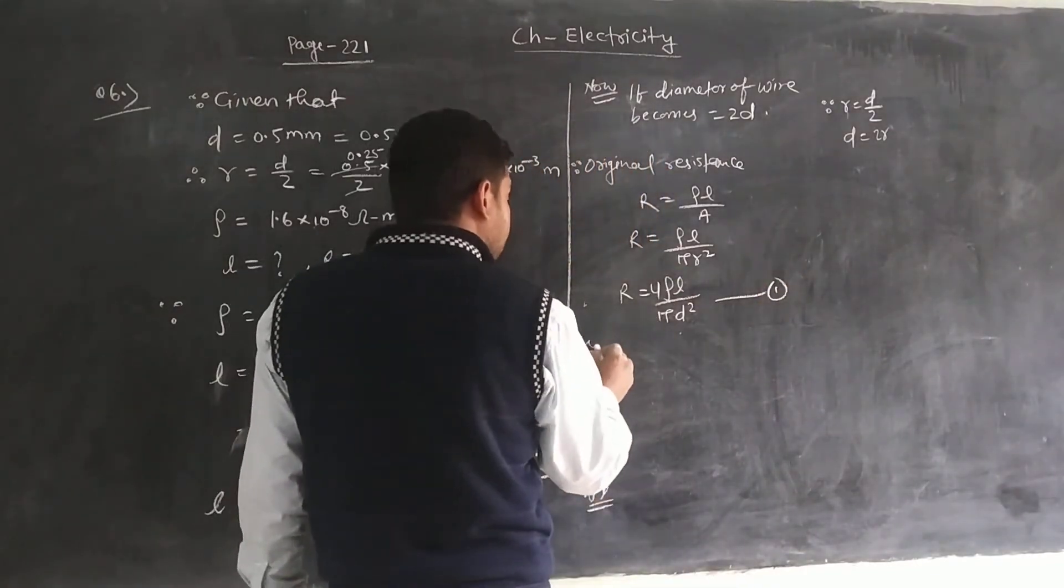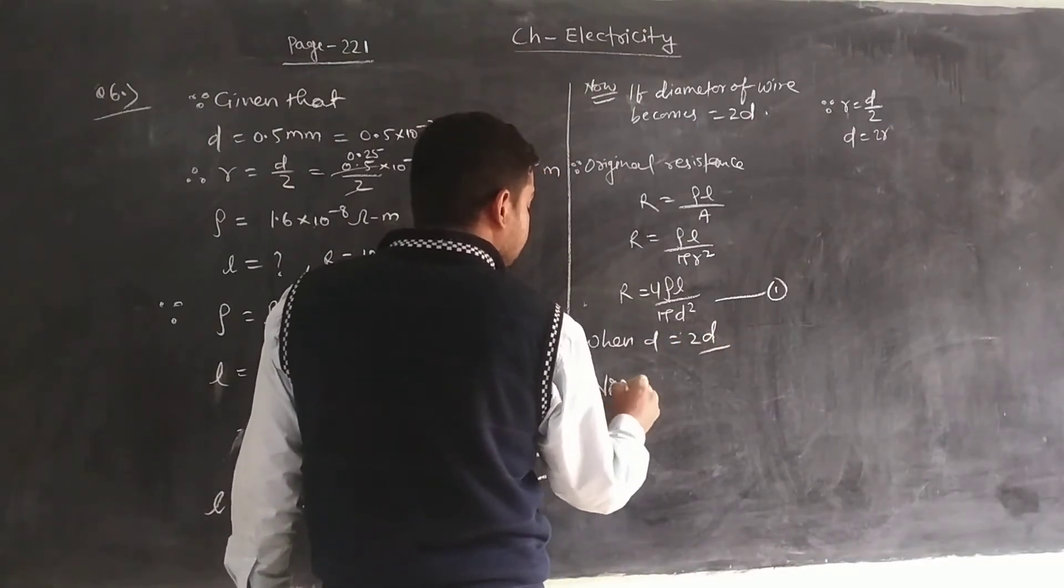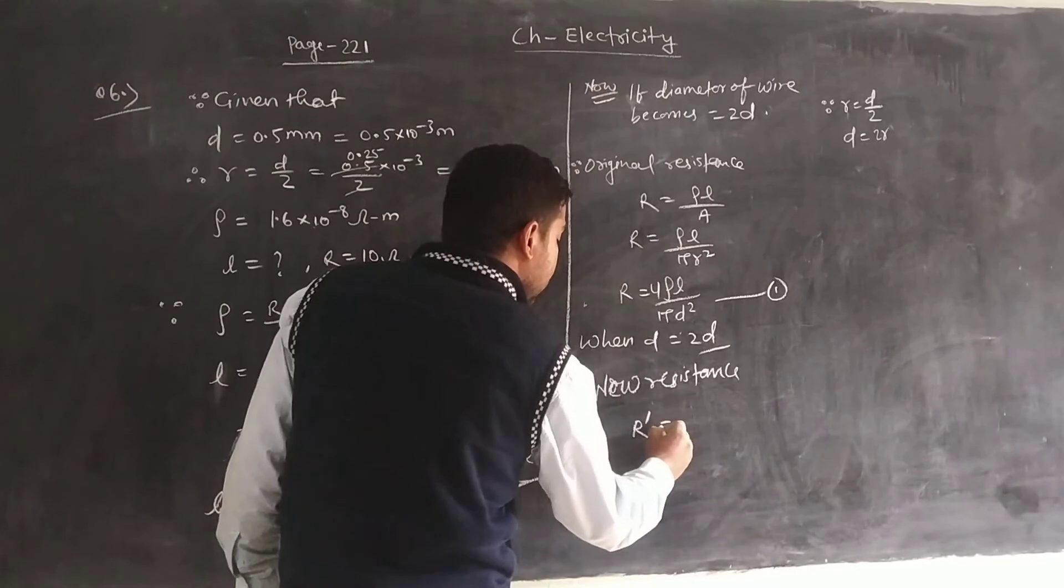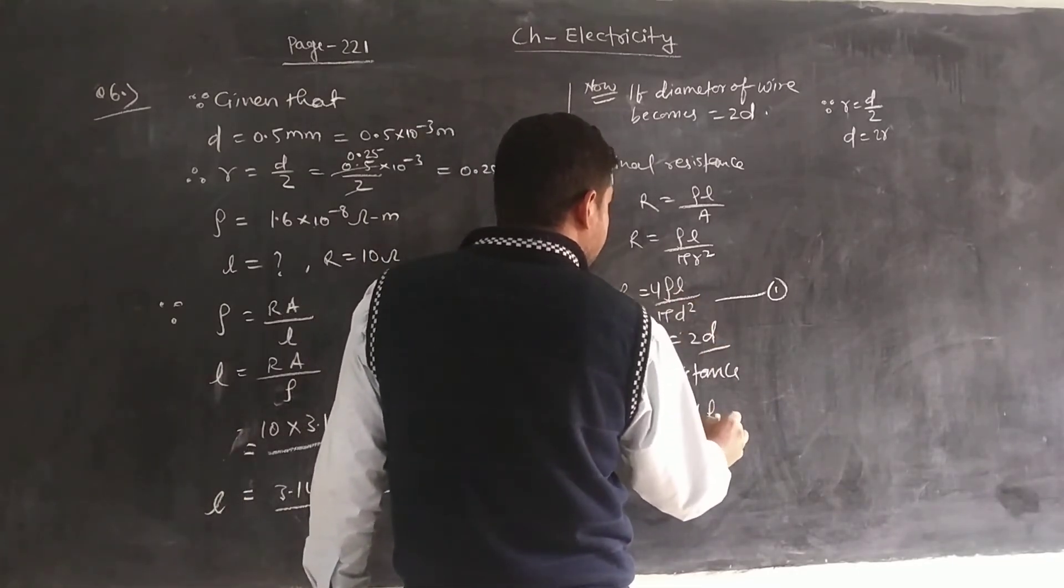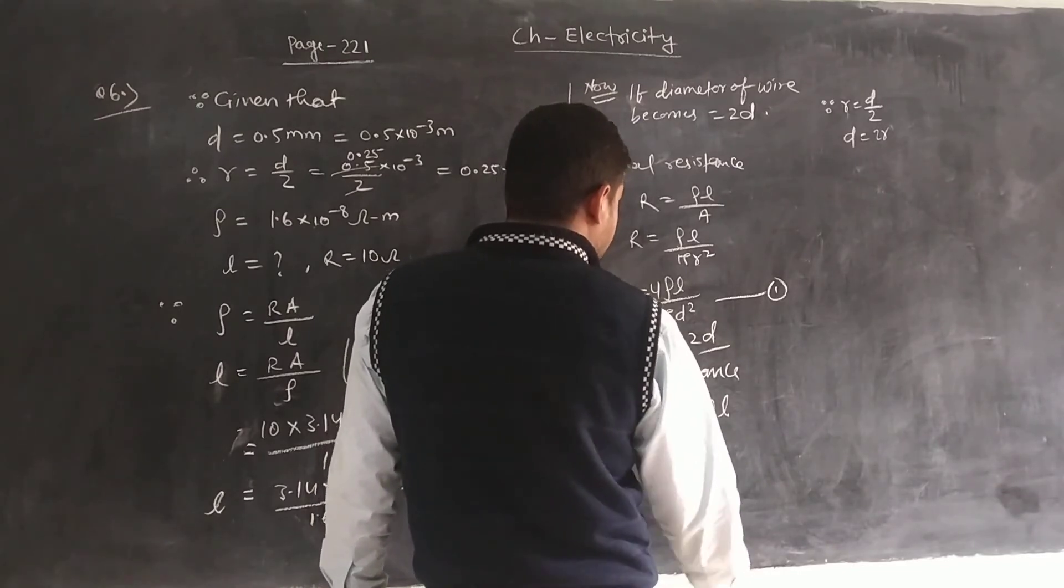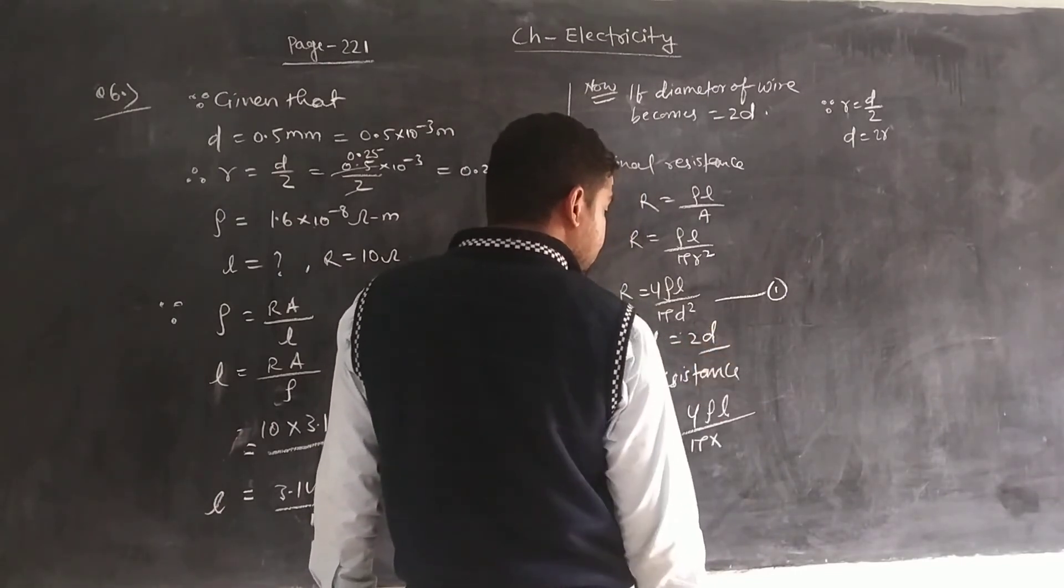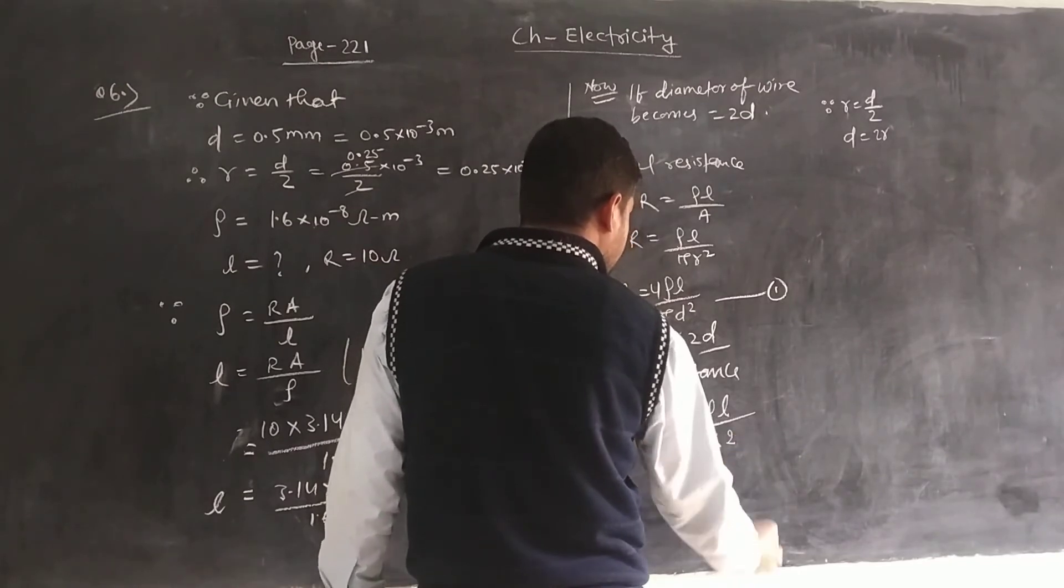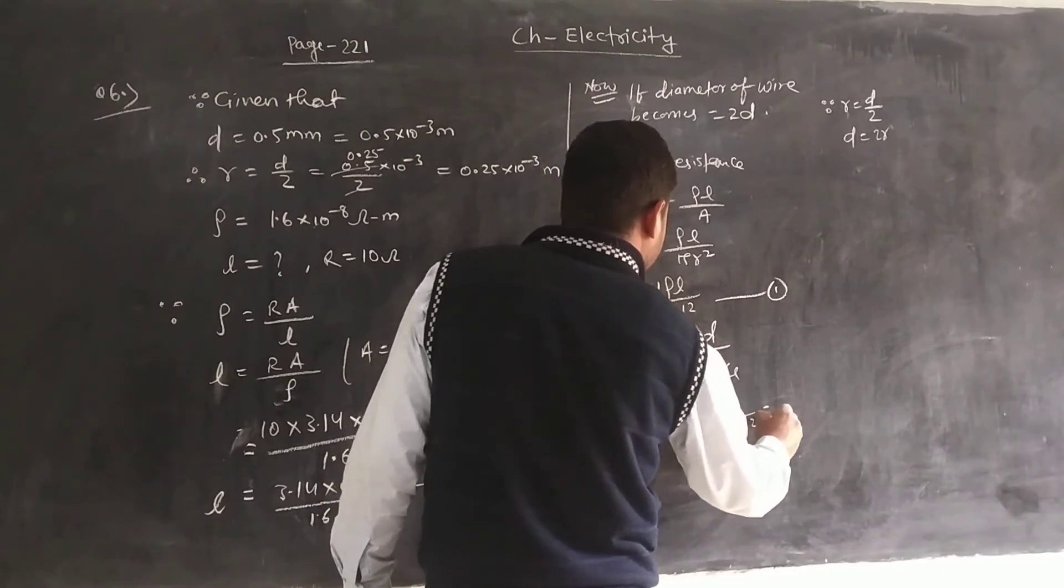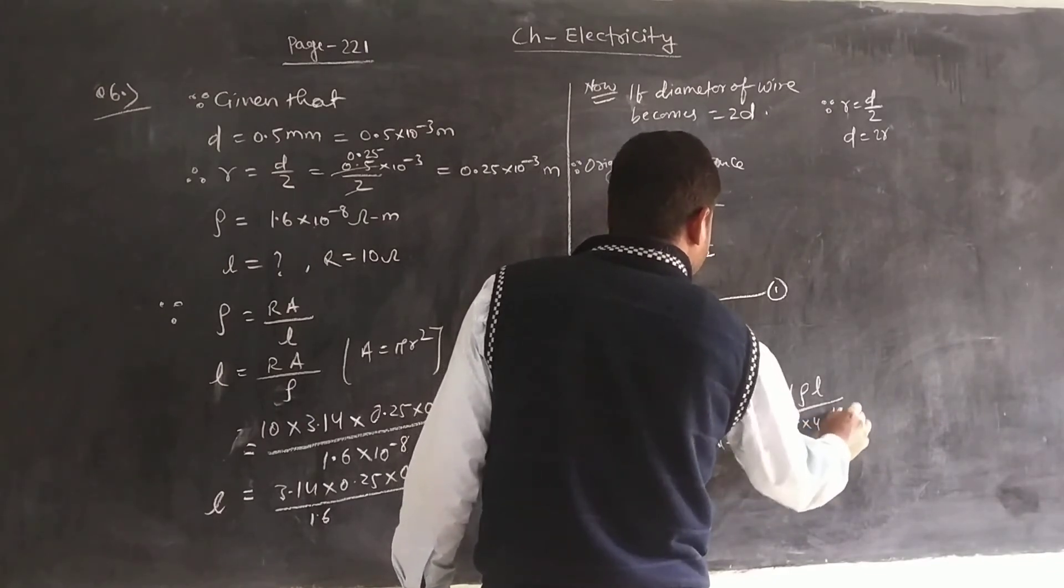When D equals 2D, the new resistance is 4 rho L by pi times 2D whole square, which equals 4 rho L by pi times 4D square. This equals rho L by pi D square.